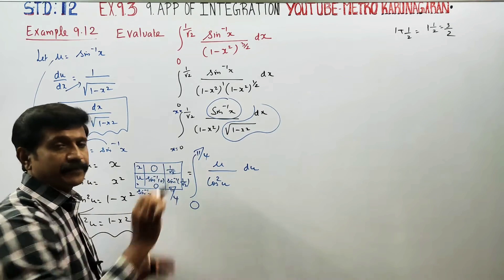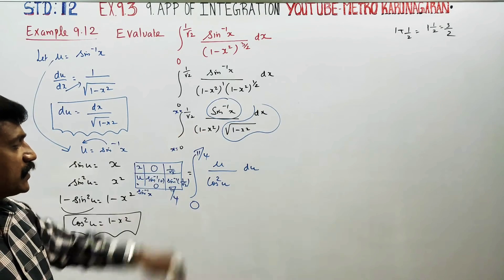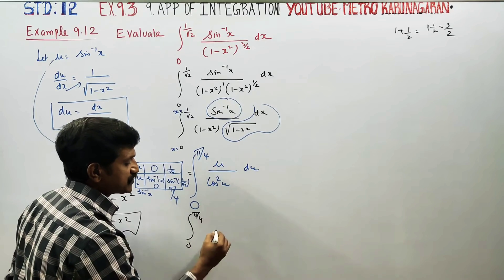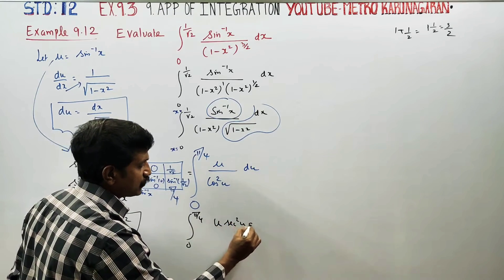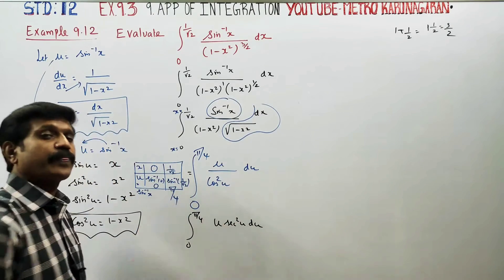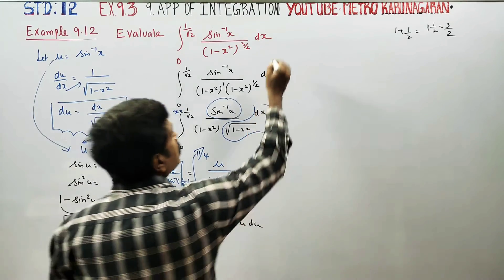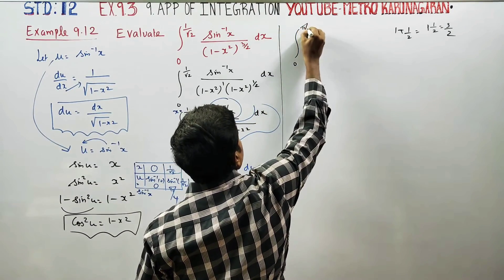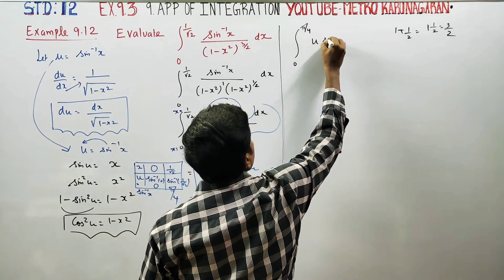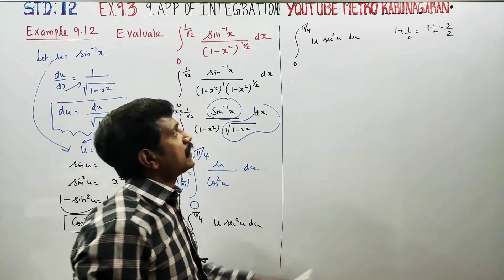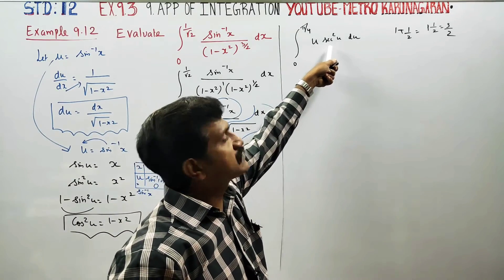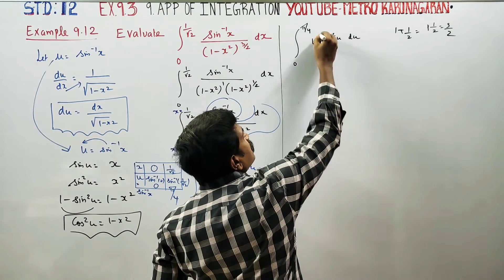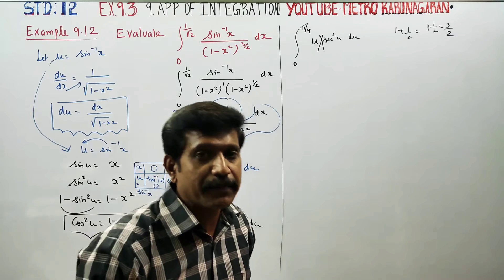The integral now becomes: from 0 to π/4 of u times cos²u du. This requires integration by parts.